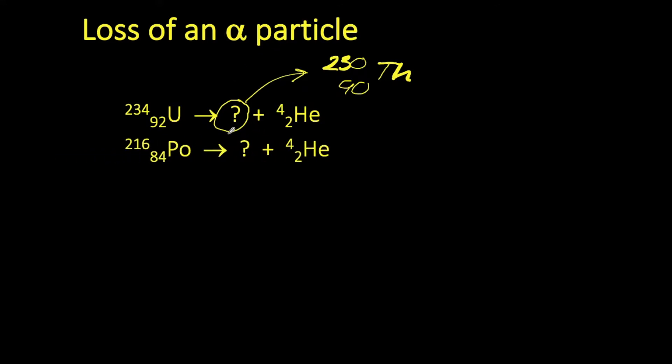Our next example, we have polonium undergoing alpha decay. So again, we've got to decrease our mass number by 4, so we go from 216 to 212. And our atomic number has got to decrease by 2, so it goes from 84 to 82. If we consult our data booklet, the element with the atomic number 82 happens to be lead.